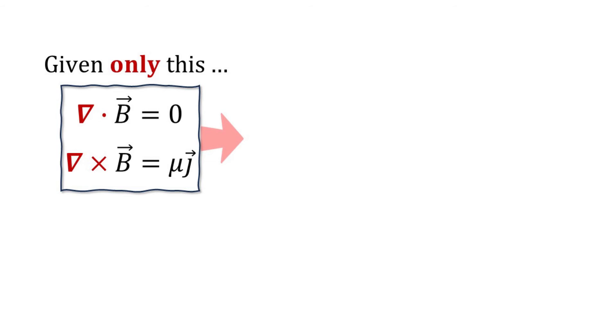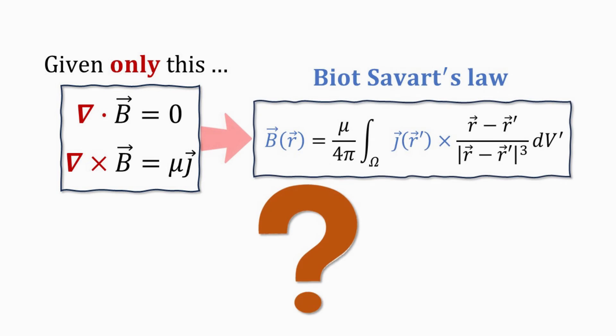So, given only the magnetic Gauss's and Ampere's law, and without any new physics or assumptions, can you arrive at the well-known Biot-Savart's law?